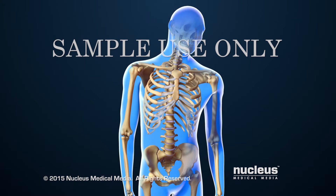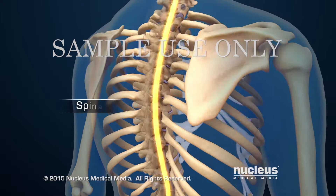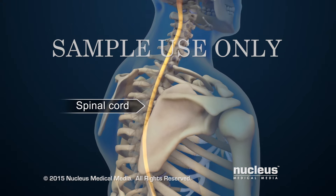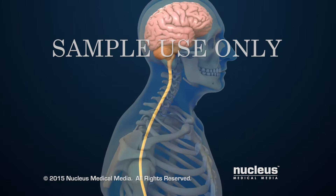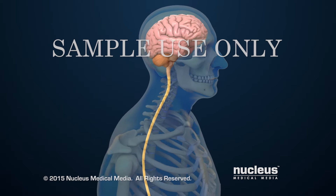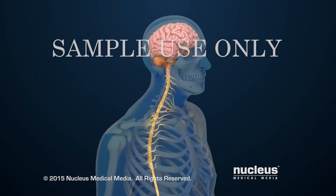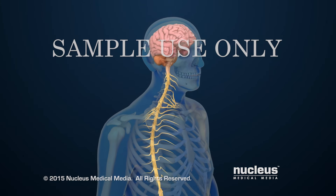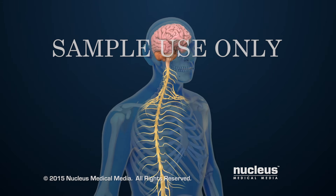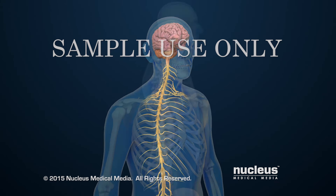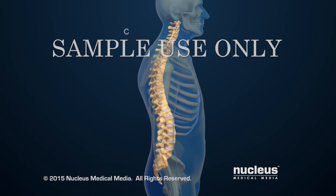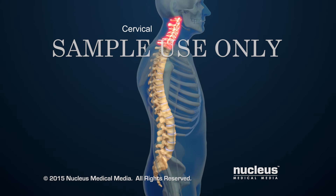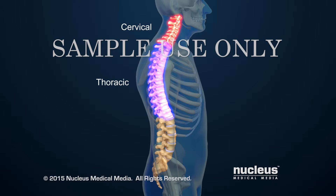Protected within the vertebral column is the spinal cord, which connects the brain to the rest of the body. Spinal nerves emanate from the spinal cord at regular intervals. The main sections of the spine are the cervical, thoracic, and lumbar regions.